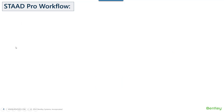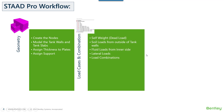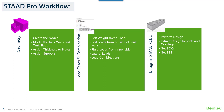To start with the workflow, we first create the geometry of the model — we create the nodes, create the model, the tank slabs, the tank plates, assign the thickness and the support. Then we go ahead for applying the loads and creating the load combinations. We will also check what different loads can be applied to the tank, and in what format — such as a trapezoidal or increasing format of load, or plate loads. We will then check the workflow of designing the analyzed tank model in RCDC, where we can get the design reports, the entire design, the drawings, the quantity, and the bar bending schedule. Bar bending schedules are generally the fabrication detailed drawings for concrete structures.